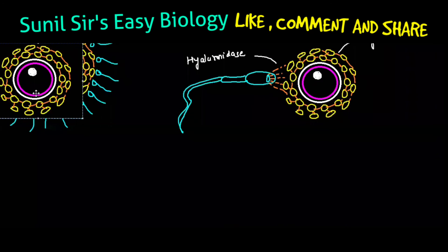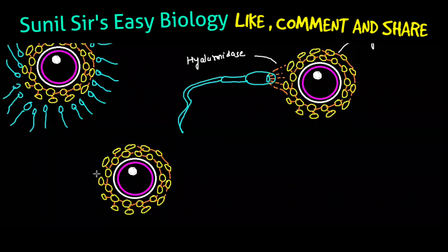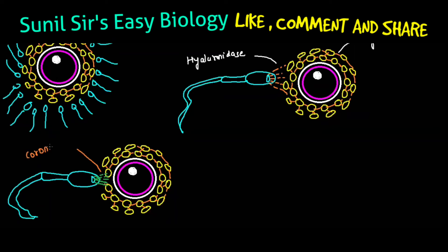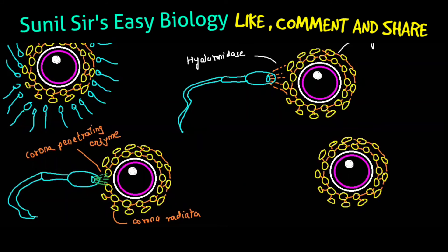The second step: the corona penetrating enzyme will be released by the sperm. You can see that the hyaluronic acid is dissolved; now the sperm releases the second enzyme called corona penetrating enzyme. This corona penetrating enzyme dissolves the corona radiata cells. Once the corona radiata cells are dissolved, the sperm touches the zona pellucida and then releases zona lysin. This is the third step — zona lysin is released by the sperm and the zona pellucida dissolves.